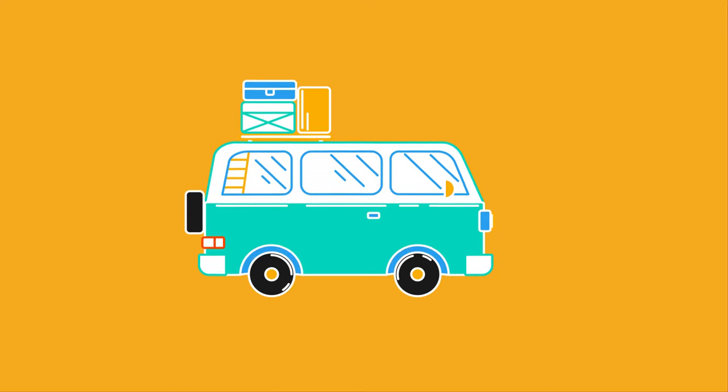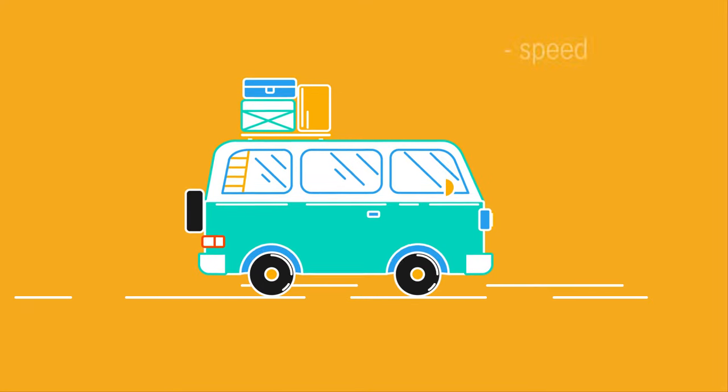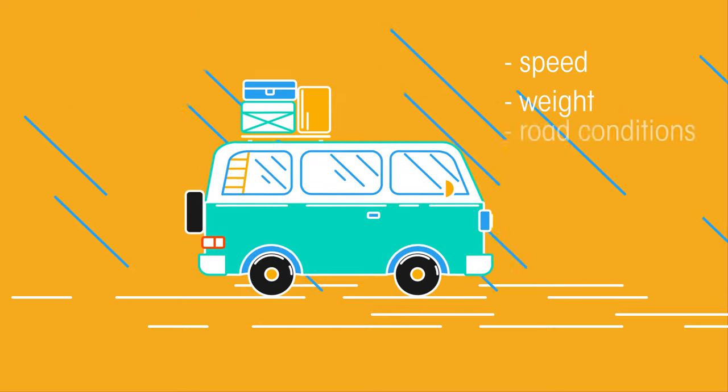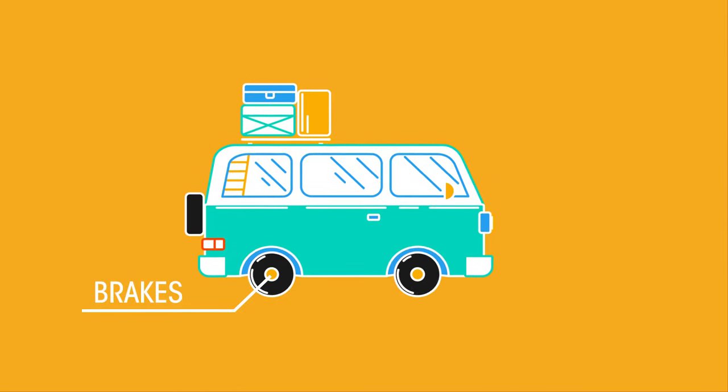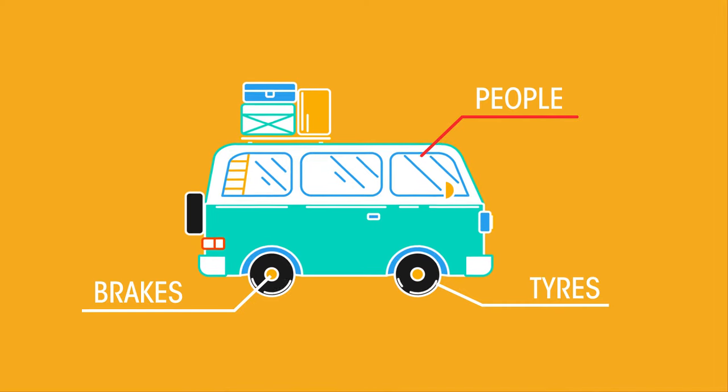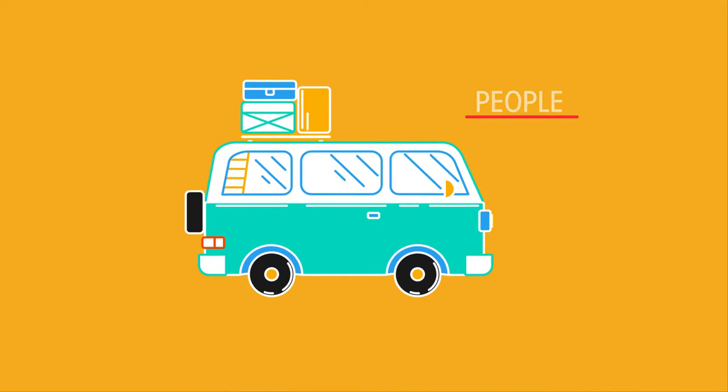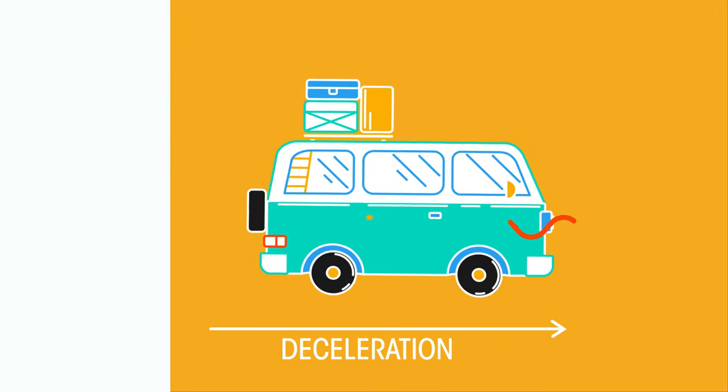Braking distance is also affected by the road's conditions, like ice and rain or wet leaves on the road, and the condition of the car. Are the brakes good? Do the tyres have good grip? And how many people are in the car? These all reduce the car's grip, making it longer to decelerate.